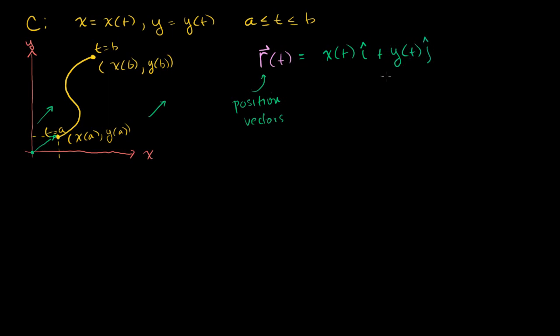Plus y of t times j. If I was dealing with a curve in three dimensions, I would have plus z of t times k, but we're dealing with two dimensions right here. And so the way this works is, for any t, and still we're going to have t is greater than or equal to a and less than or equal to b, and this is the exact same thing as that.